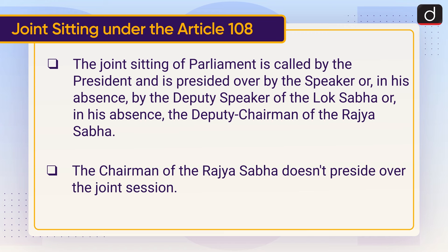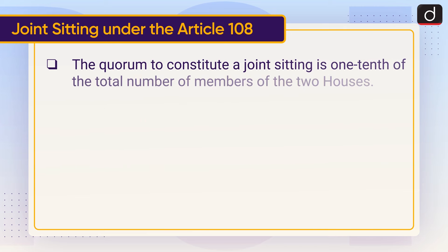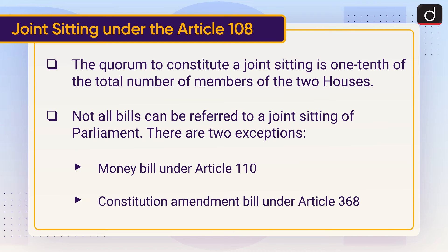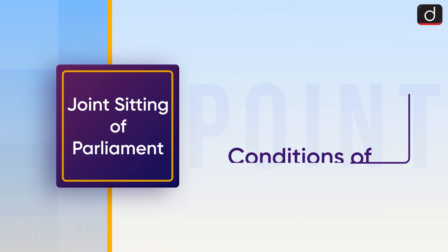The Chairman of the Rajya Sabha does not preside over the joint session. The quorum to constitute a joint sitting is one-tenth of the total number of members of the two houses. Not all bills can be referred to a joint sitting of parliament. There are two exceptions: the Money Bill under Article 110, and the Constitution Amendment Bill under Article 368.